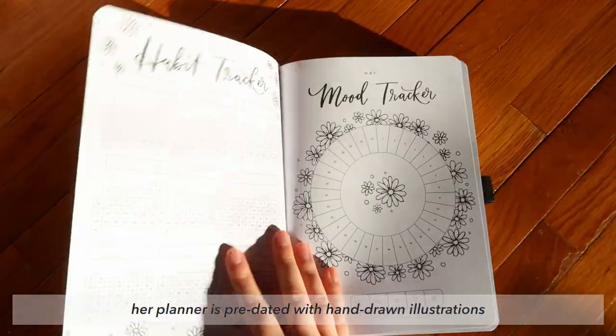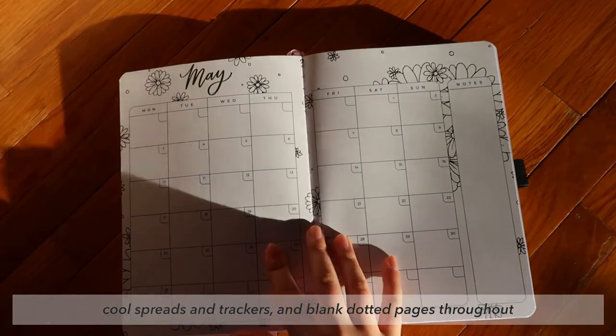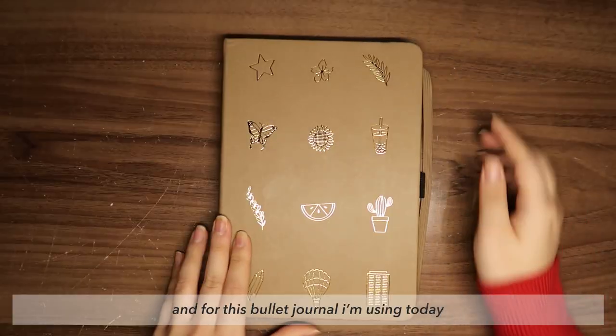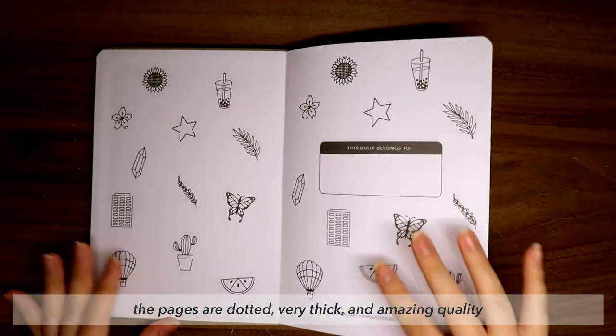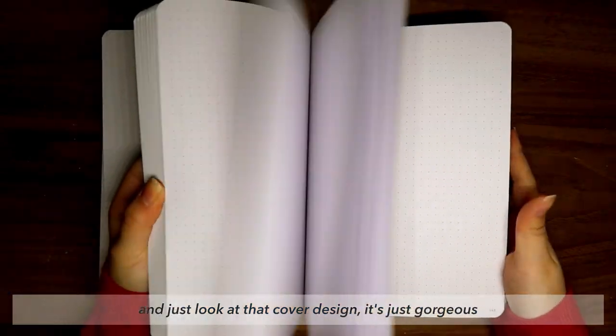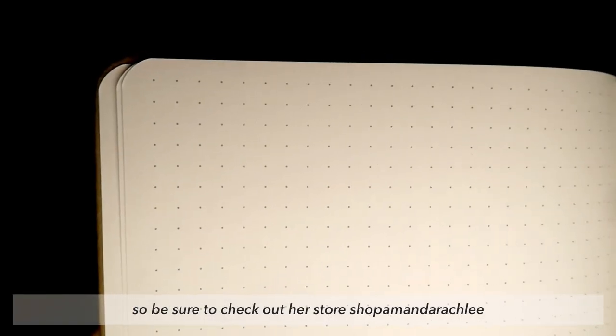Along with her new 2021 Doodle Planner in the shade lilac, her planner is predated with hand-drawn illustrations, cool spreads and trackers, and blank dotted pages throughout. It looks incredible. For this bullet journal I'm using today, the pages are dotted, very thick and amazing quality. Just look at that cover design - it's gorgeous.